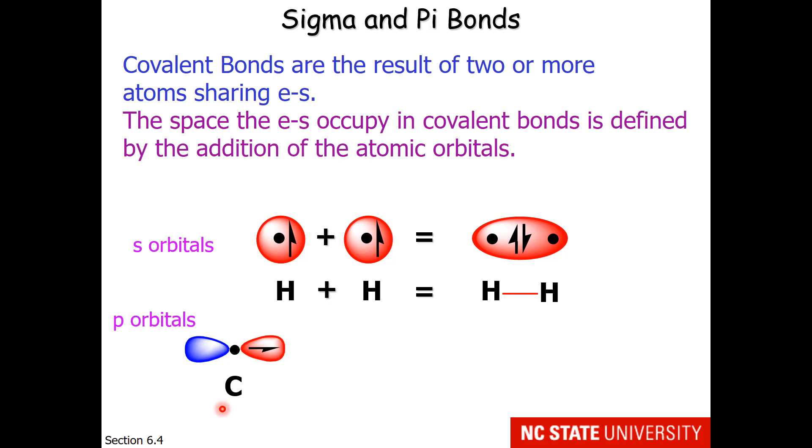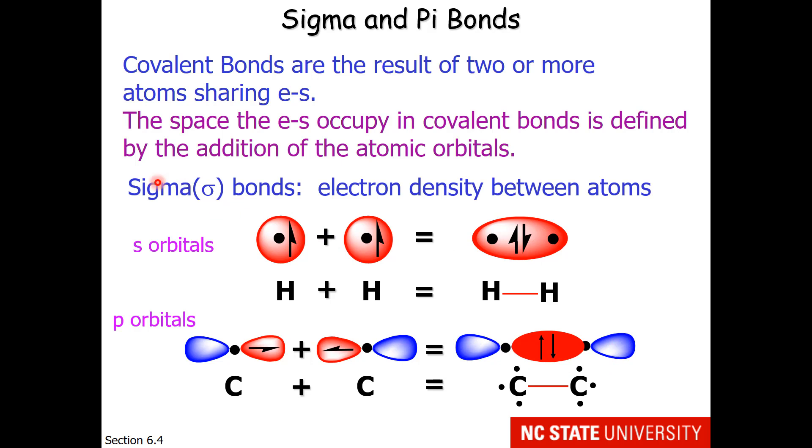One could also envision this happening with p orbitals. Here is a carbon atom with the nuclei and the p orbital. Remember that there is a node here, so we're showing part of the electron region here in red and the other part in blue. If a carbon with a p orbital met another carbon with a p orbital and they were oriented so that when you brought these two nuclei closer together, the red region overlapped, you would wind up with two electrons shared in this covalent bond in this probability region, represented by the red between the two nuclei and then small lobes on either side of the nuclei. These are known as sigma bonds.